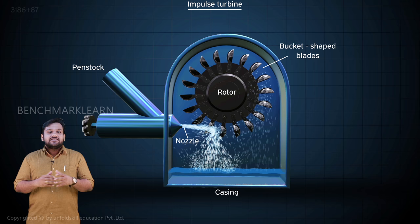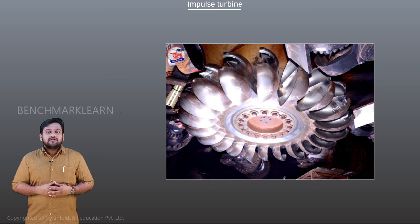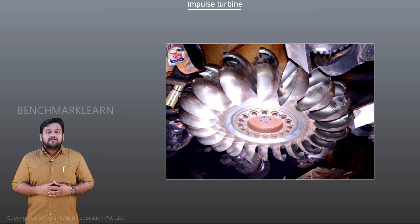The water strikes the wheel tangentially, so this is also called a tangential flow turbine. Impulse turbines are suited for high head and low discharge of water. The Iduki project in Kerala uses six Pelton turbines, each with a capacity of 130 megawatts and a rated head of 660 meters.